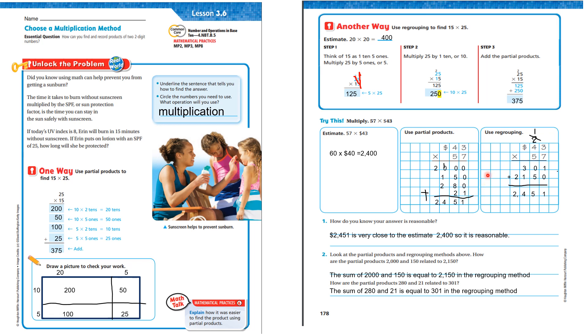Now, let's regroup. 7 times 3 is 21. Carry the 2. 7 times 4 is 28 plus 2 is 30, 301. I had to put that 0 there as my placeholder. 5 times 3 is 15. Carry the 1. 5 times 4 is 20 plus 1 is 21. Add it together, I get 2,451.